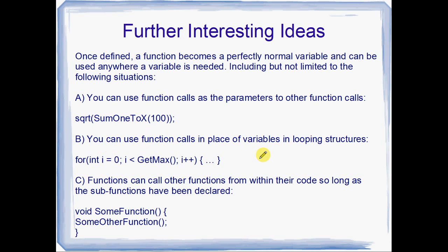You can also use function calls in place of variables in looping structures. So for int i equals 0, we're setting up a for loop here, while i is less than get max i++. So get max will be some function that I've defined somewhere that returns the maximum amount that I want to count up to with i. And, of course, also you can use function calls from within the body of other functions. So this is another example down here. We've got void some function, open close brackets. This one takes no operands at all. Then we open up the body of that function. But, within the body of that function, we can call another function.